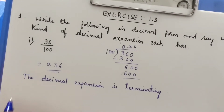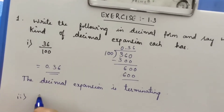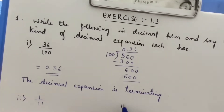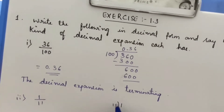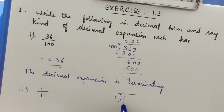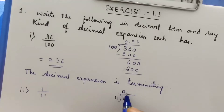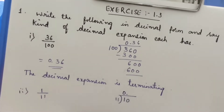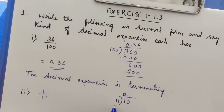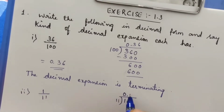Now let us see the second question. The second question is 1 by 11. You have to divide 1 by 11. Here 11 has 2 digits and 1 has only 1 digit, so it is not possible. You have to write 0 point, then take 0. It will be 10 — still 2 digits but still not divisible.